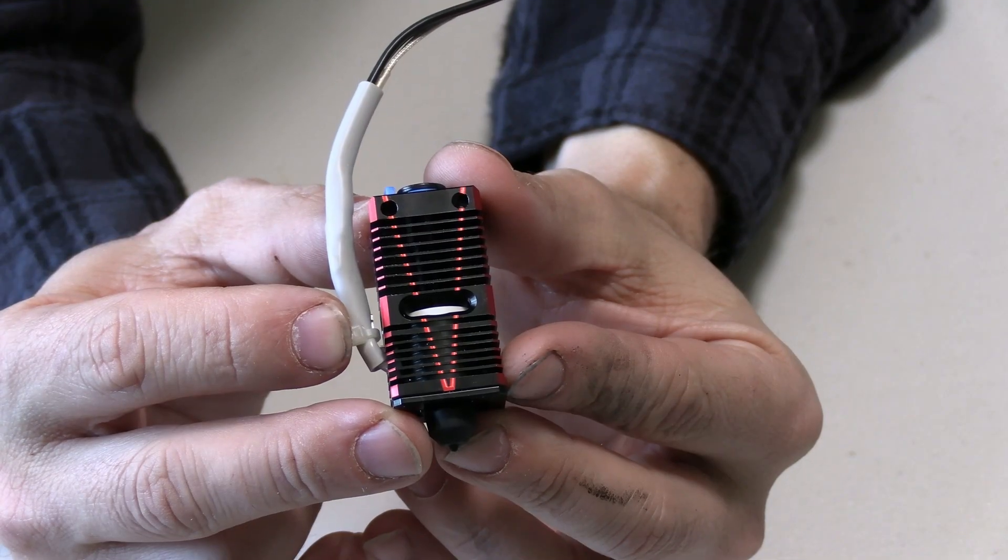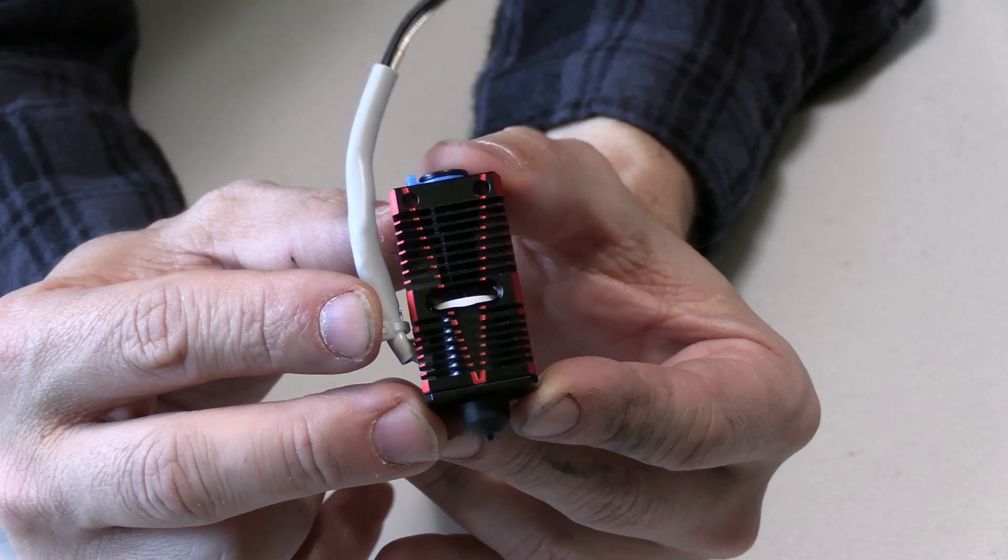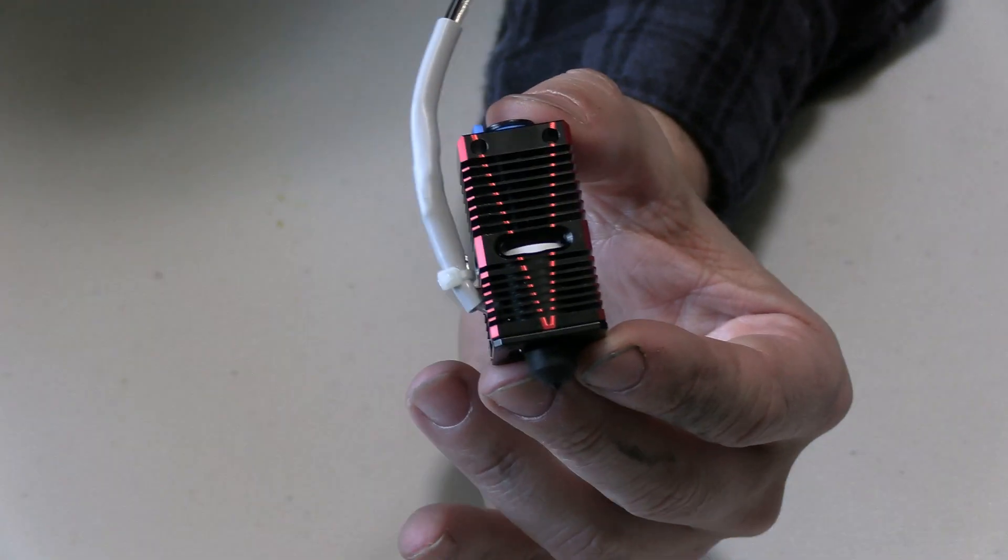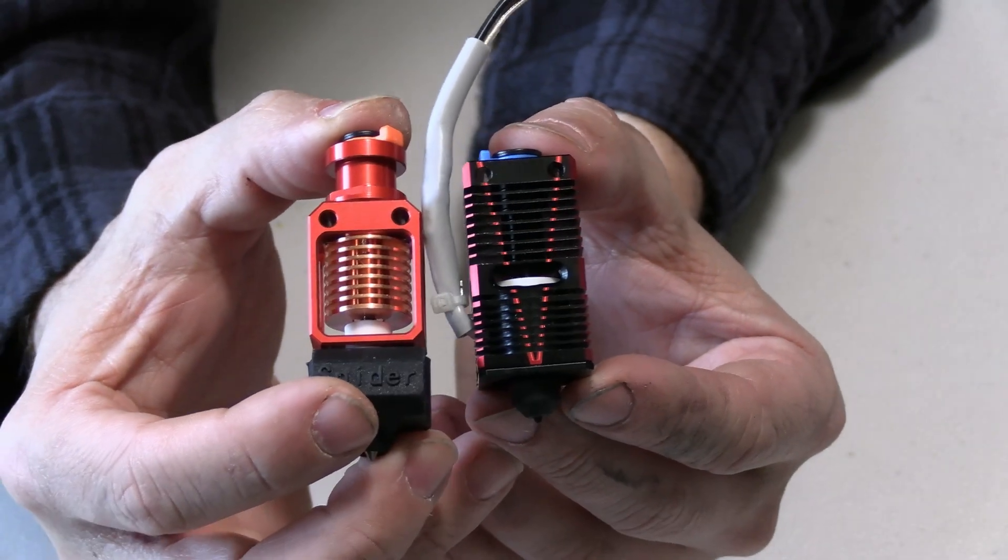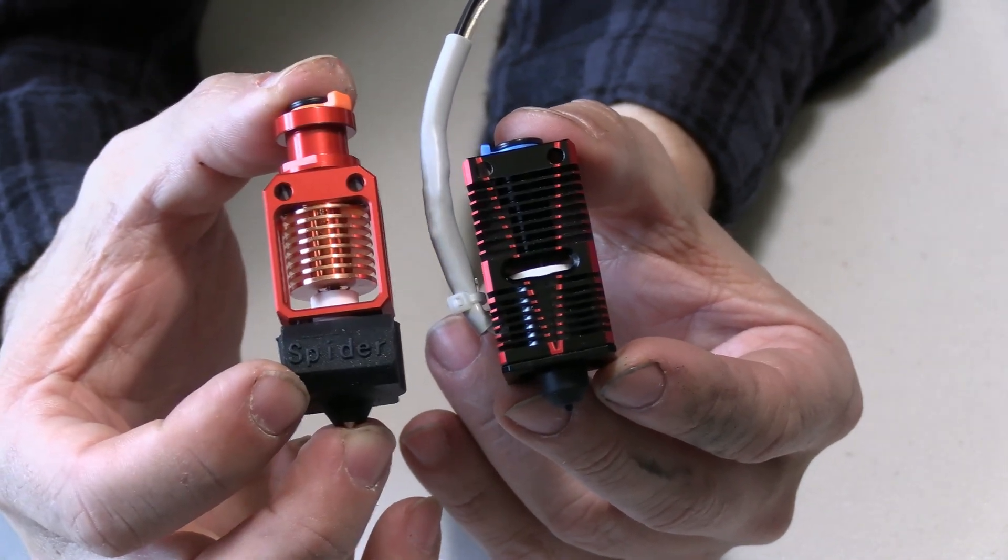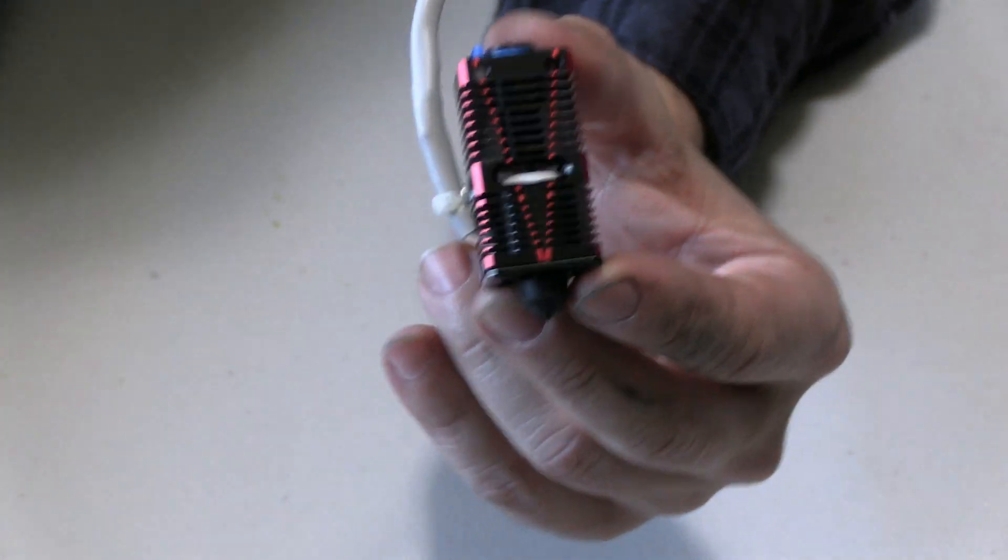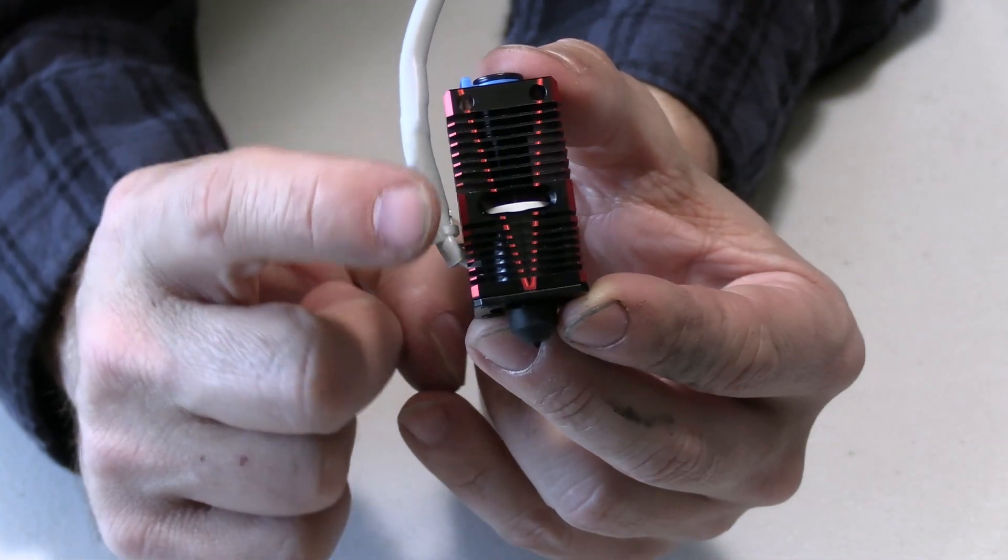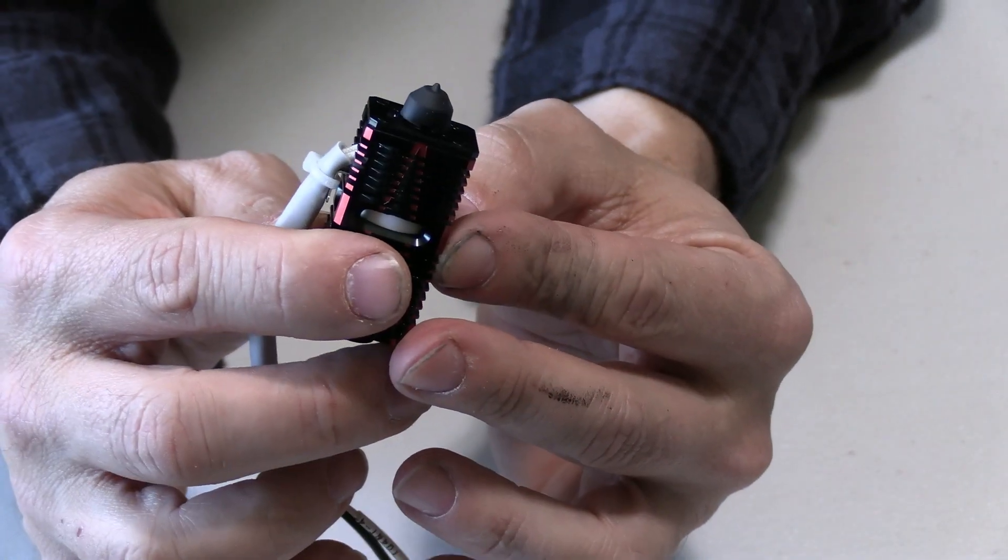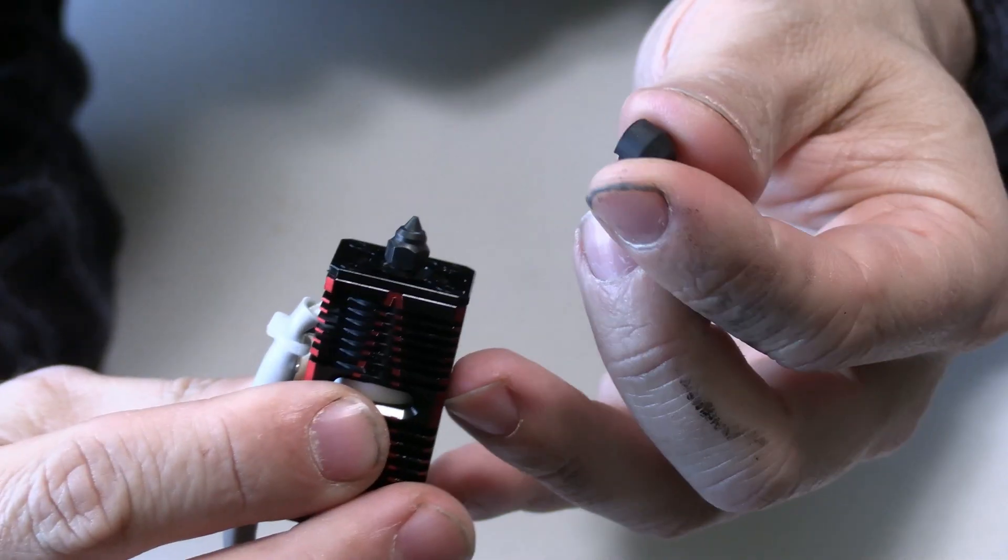Here is the new Spider 4 aka the Speedy Spider. Right away you will notice it's quite different from the standard hotends you are used to. For example here is the beautiful Spider 3. You will see that the Speedy Spider doesn't have a heat block or a silicon boot on that heat block. Instead the Speedy Spider simply has the 360 degree ceramic heater tube and a silicon nipple covering the nozzle. That nipple simply pops off.